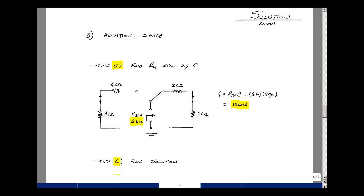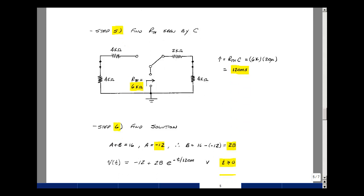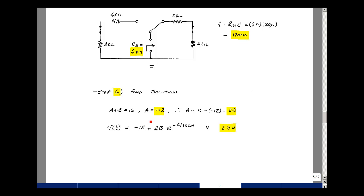Now we can find the solution to our problem. We have that a plus b was 16, a was minus 12, so b is equal to 16 minus a minus 12, or 28. So our equation would be a plus b times e to the minus t over tau, so minus 12 plus 28 times e to the minus t over 120 milliseconds. And this is true for t greater than or equal to zero.